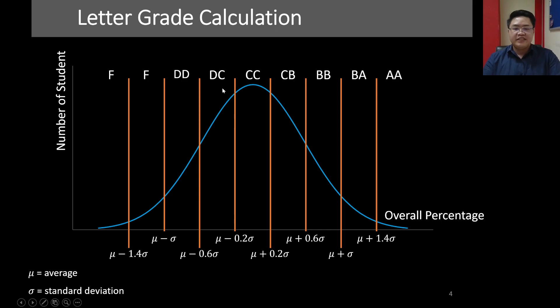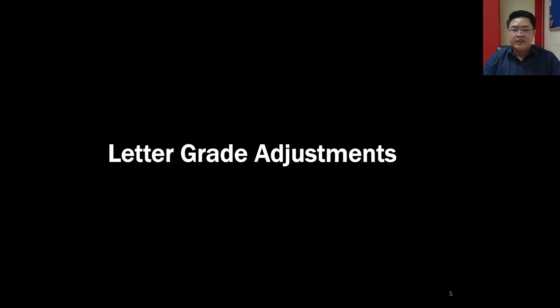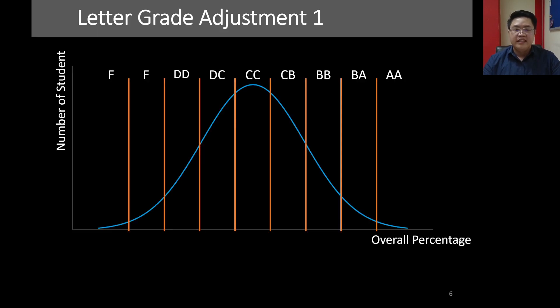This calculation would work or would be applicable for 90% of the time. However, the system also has some adjustments to be applied on top of the previous calculation. Now let's look at the first adjustment. I usually call this one boundary condition to my students, to my first year students.